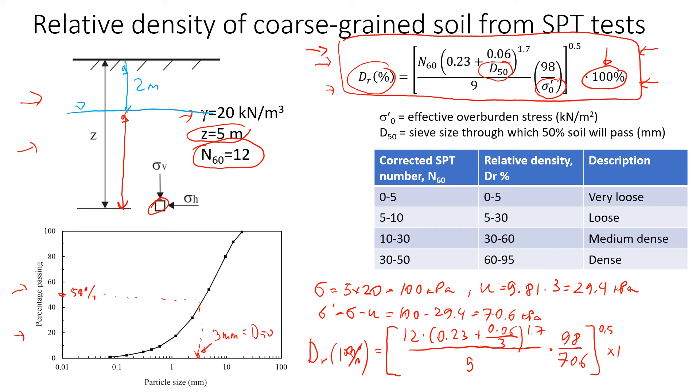To change to percentage, we multiply by 100. According to my calculations, the relative density should be around 41.8%. You can check it by yourself.